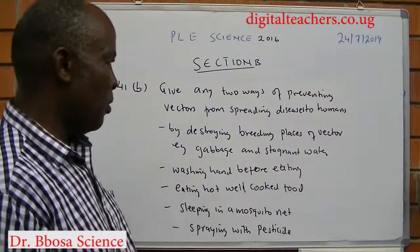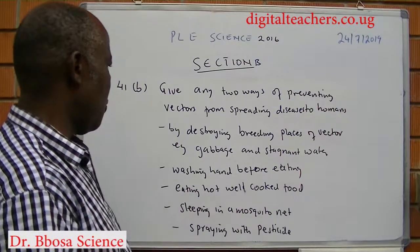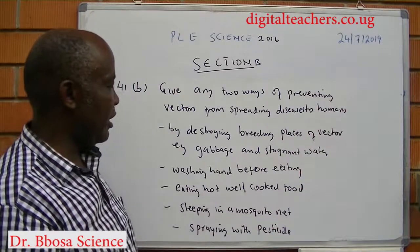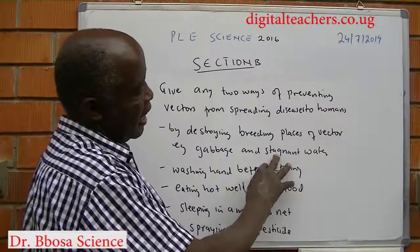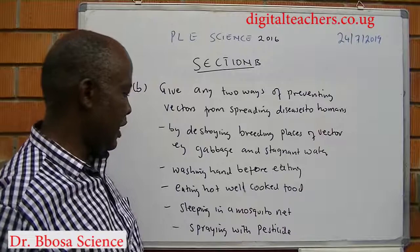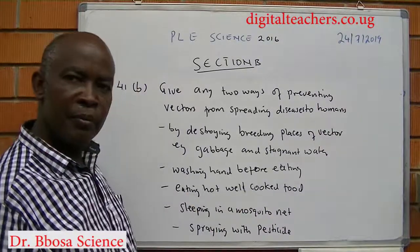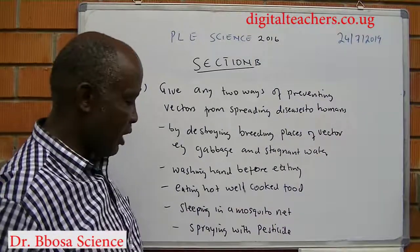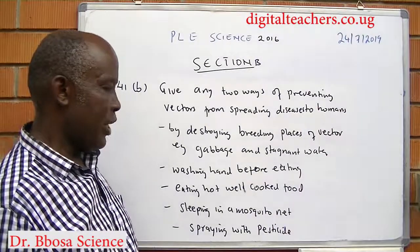Part 1B: give any two ways of preventing vectors from spreading diseases to humans. By destroying breeding places, for example garbage for house flies, stagnant water for mosquitoes. By washing hands before eating, by eating hot well-cooked food to prevent cholera, by sleeping in a mosquito net, by spraying vectors with pesticides.